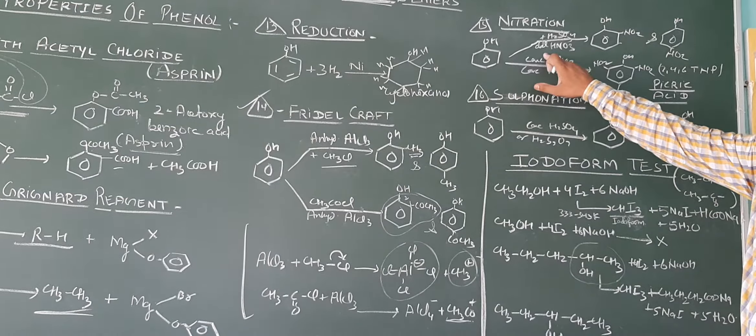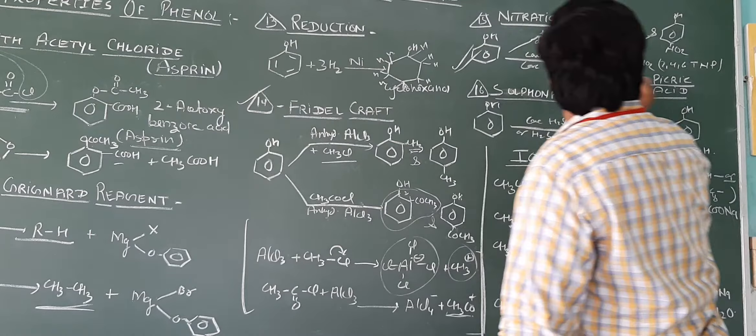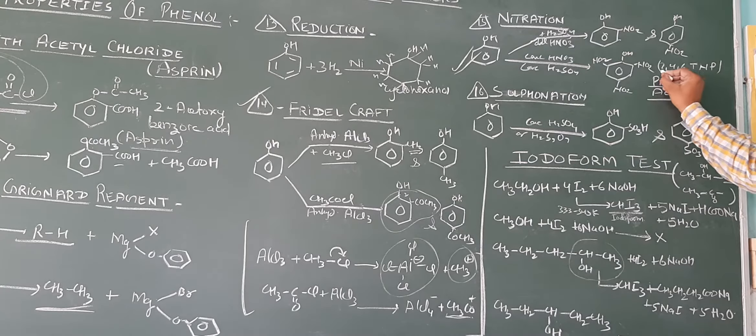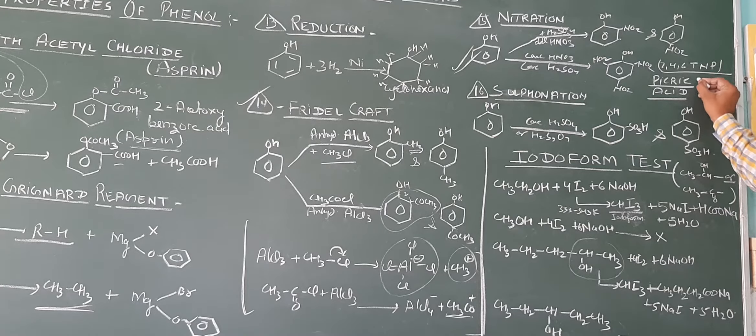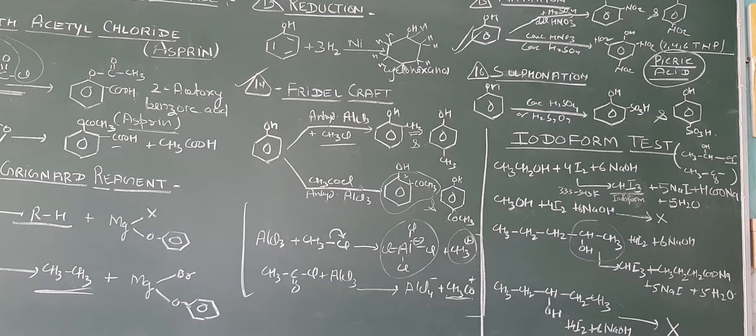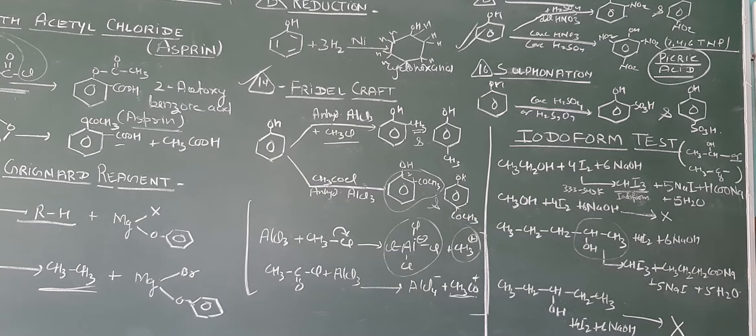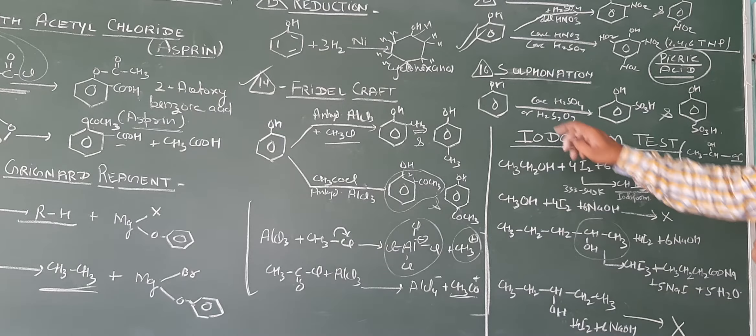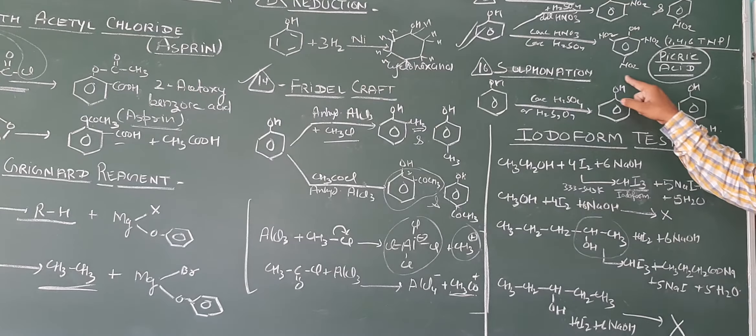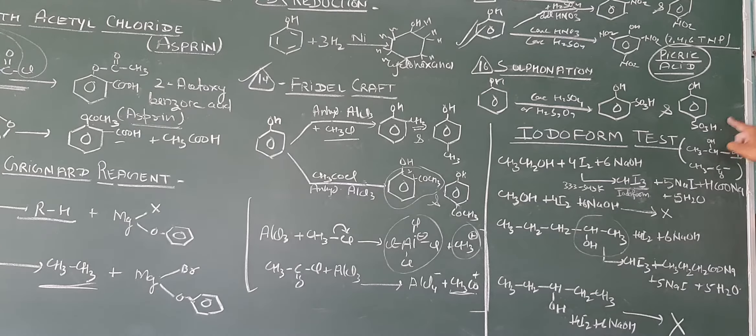Now, nitration. If we have dilute nitric acid, then we get para product. If it is concentrated, then it is very important. If it is concentrated, then 2,4,6-trinitro phenol. That is 2,4-TNP or picric acid. Picric acid is an explosive, like TNT, TNB, trinitroglycerine, RDX.